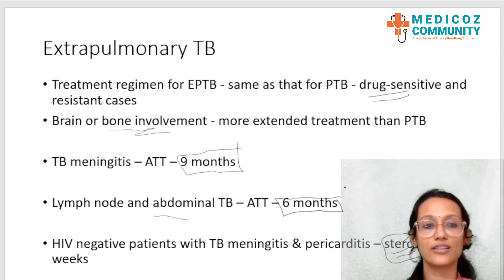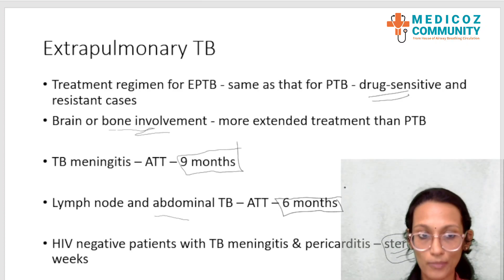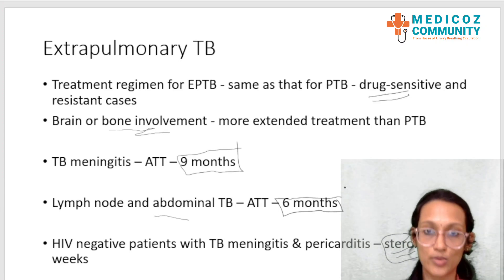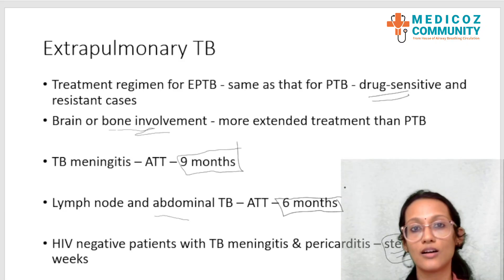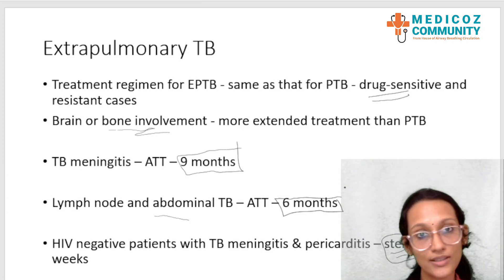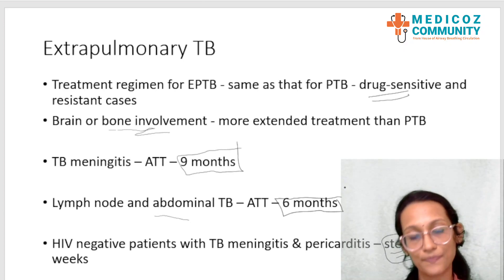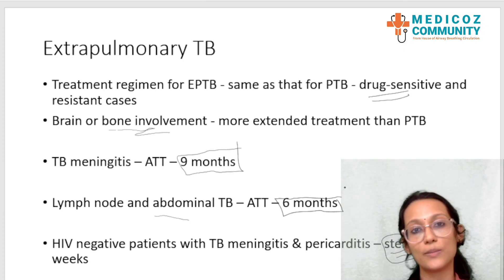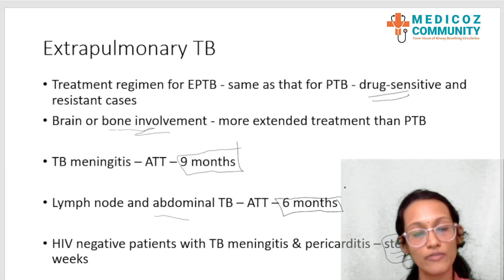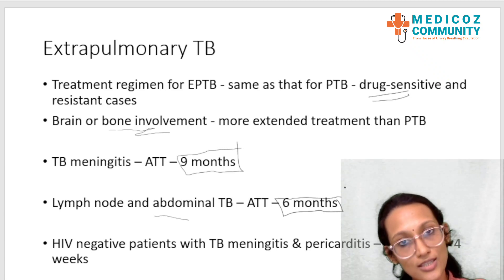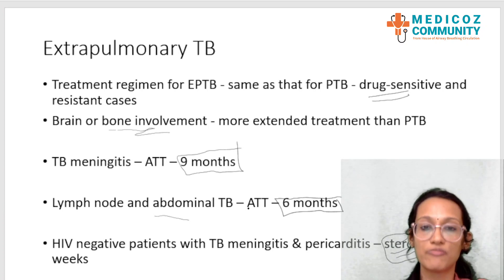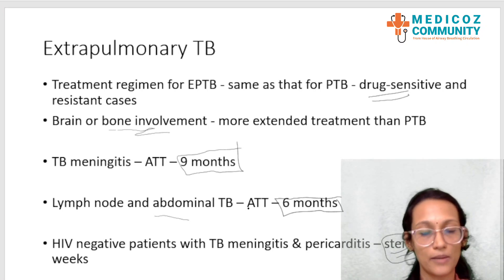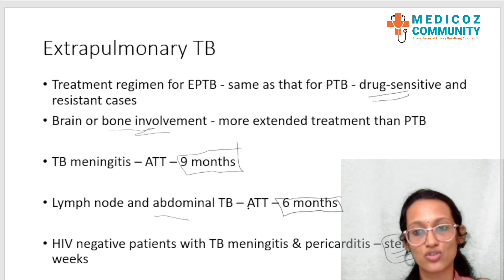To summarize extrapulmonary tuberculosis: we discussed which organs are usually affected, with genitourinary being most common and an important exam area. Each extrapulmonary TB has its own diagnostic algorithm differing mainly in the sample taken, with CBNAAT or Xpert testing used. Treatment is decided based on whether it is drug sensitive or drug resistant. For TB meningitis and bone involvement, treatment is longer — up to 9 months.